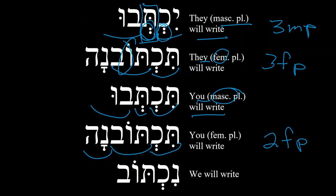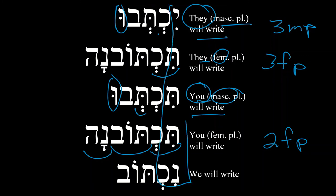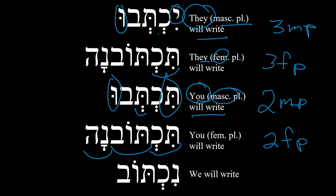Notice that tiktevu (2MP) is very similar to yiktevu (3MP). The 'u' at the end gives us the plural, but what's different is the prefix — all of these have that prefix. If it's 'they' (3MP), it's a yod prefix. If it's 'you,' masculine plural (2MP), it is a tav prefix. Finally, if we wanted to say 'we will write,' we would say niktov. Notice the nun at the prefix — like the personal pronoun for 'we' is naḥnu. Think of the nun. We also have that ḥolam vav here.